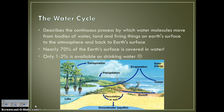We're going to start with the easiest cycle. I'm not going to spend a lot of time on this because you learned it in earth science in sixth grade — that is the water cycle. The water cycle, also known as the hydrologic cycle, describes the continuous process by which water molecules move from bodies of water, land, and living things on earth's surface up to the atmosphere and then back to earth's surface. Water covers nearly 70% of the earth's surface, but only one to two percent is actually available as drinking water, so thank goodness we have the water cycle.